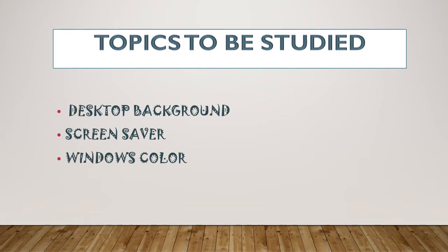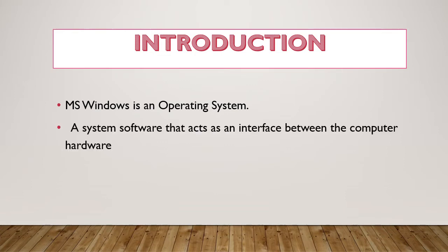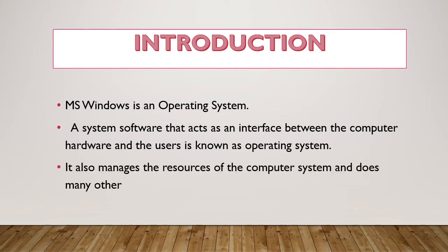First we will have a look at the introductory part. MS Windows is an operating system — this we are all aware of. A system software that acts as an interface between the computer hardware and the user is known as an operating system. The operating system basically serves as an interface between the hardware and user, and also manages the resources of the computer.